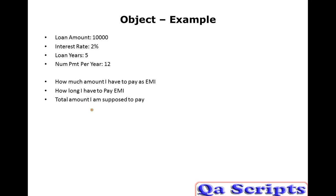You would like to know the total amount he is supposed to pay at the end of 5 years. And also you would like to know what is the total interest he will pay at the end of 5 years. Because here 2% is the rate of interest for 10,000. So you would like to calculate it. If I ask you to calculate this, what actually will you do?